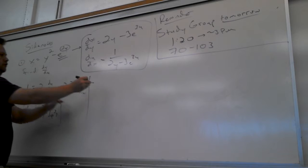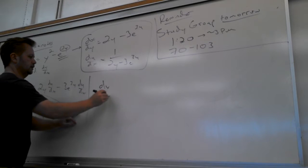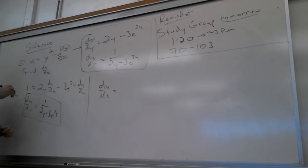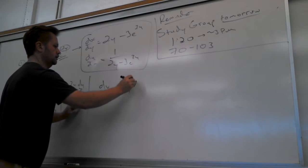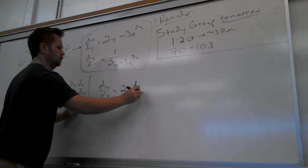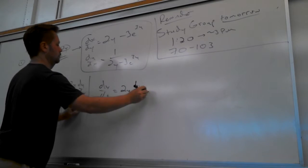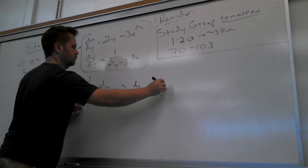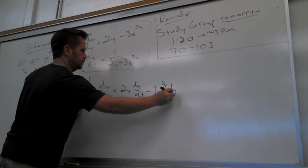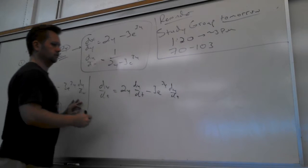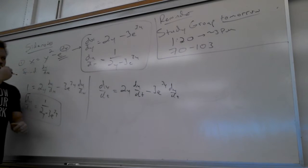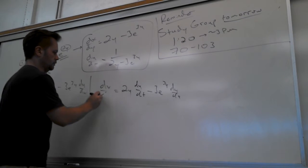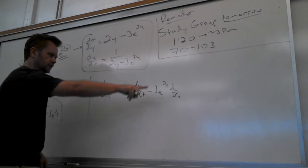How would I do related rates? So it would be dx/dt — I'll get it started. dx/dt equals 2y dy/dt, minus 3e^(3y) dy/dt. Is that cool? But then see how I can just cancel the dt's?